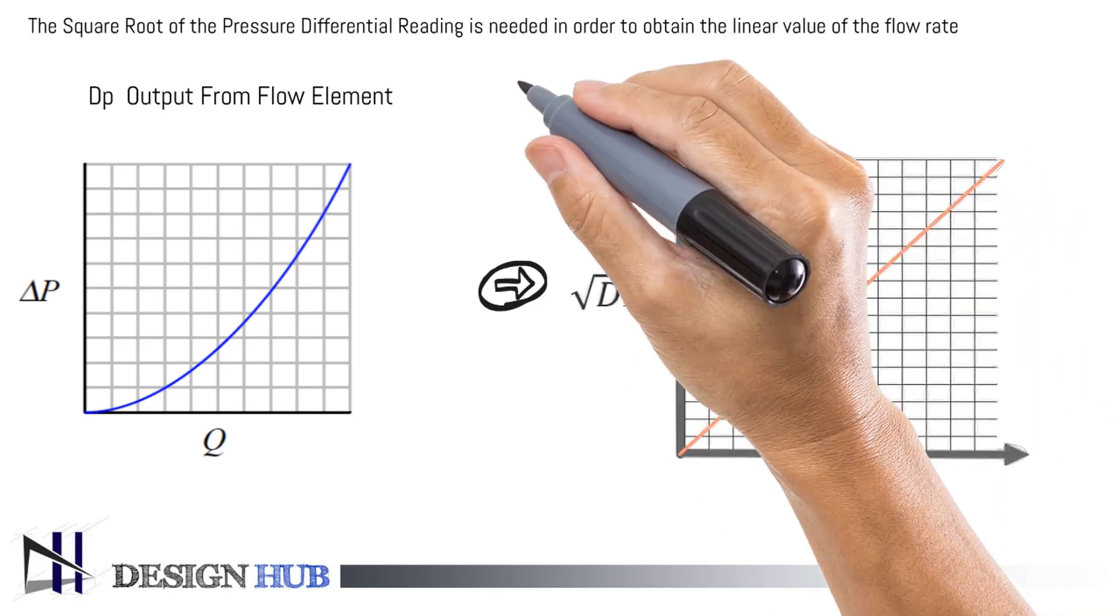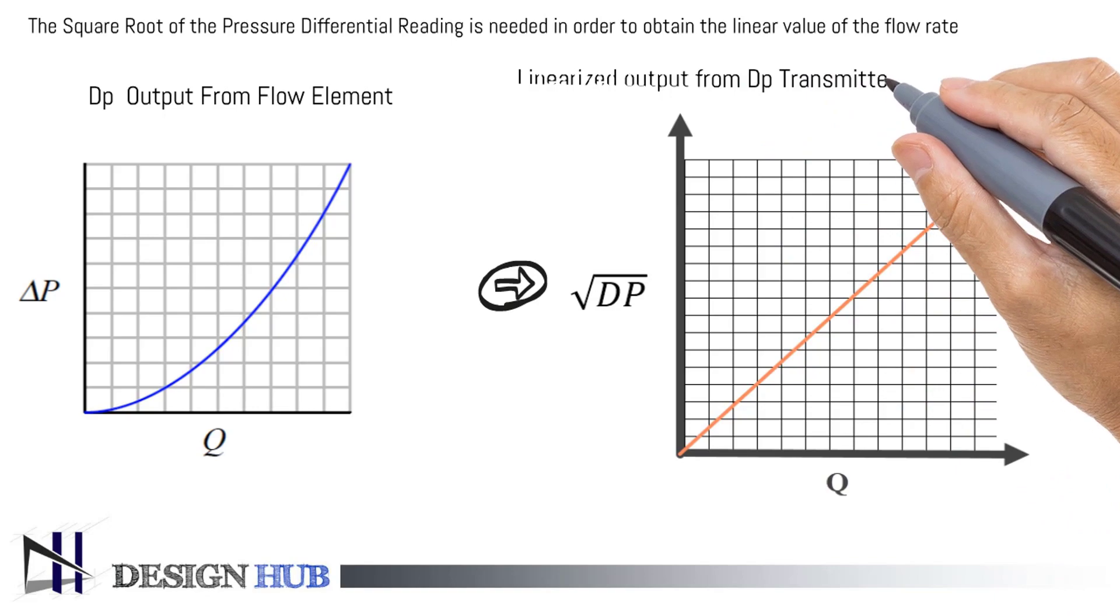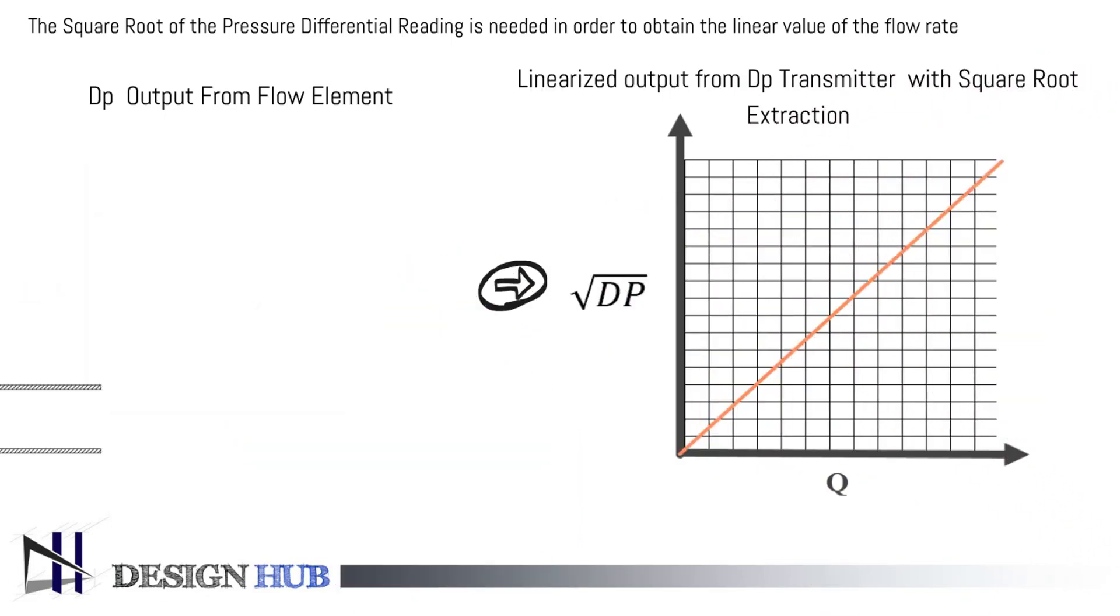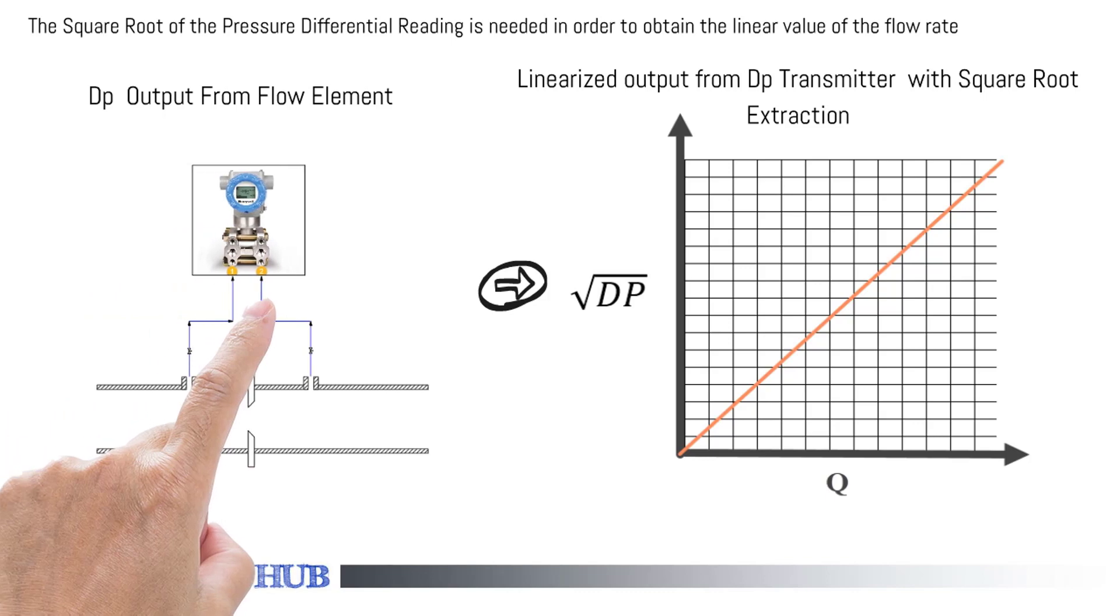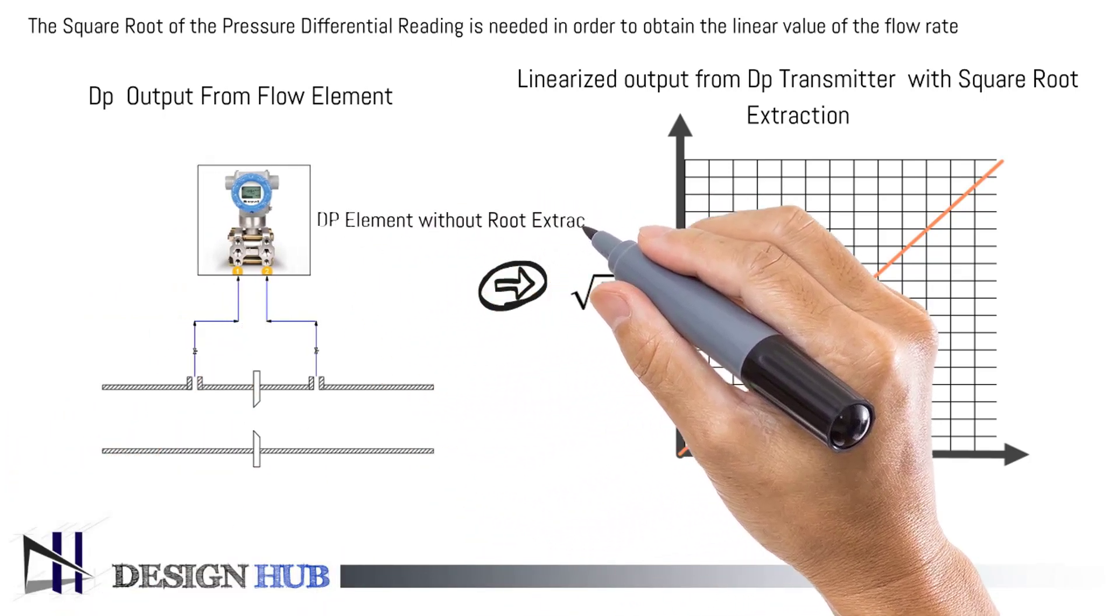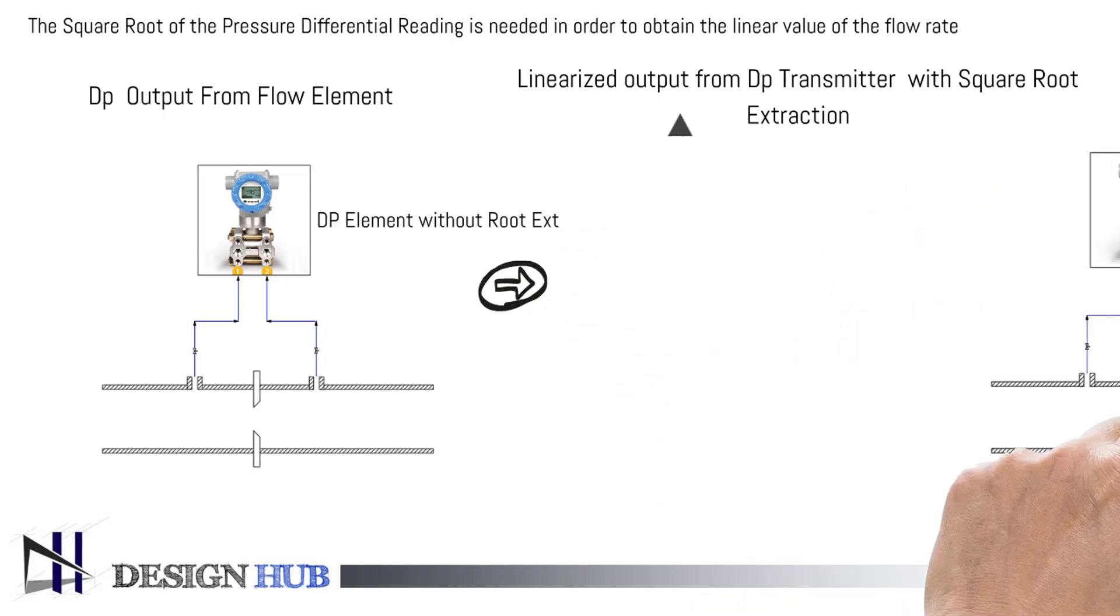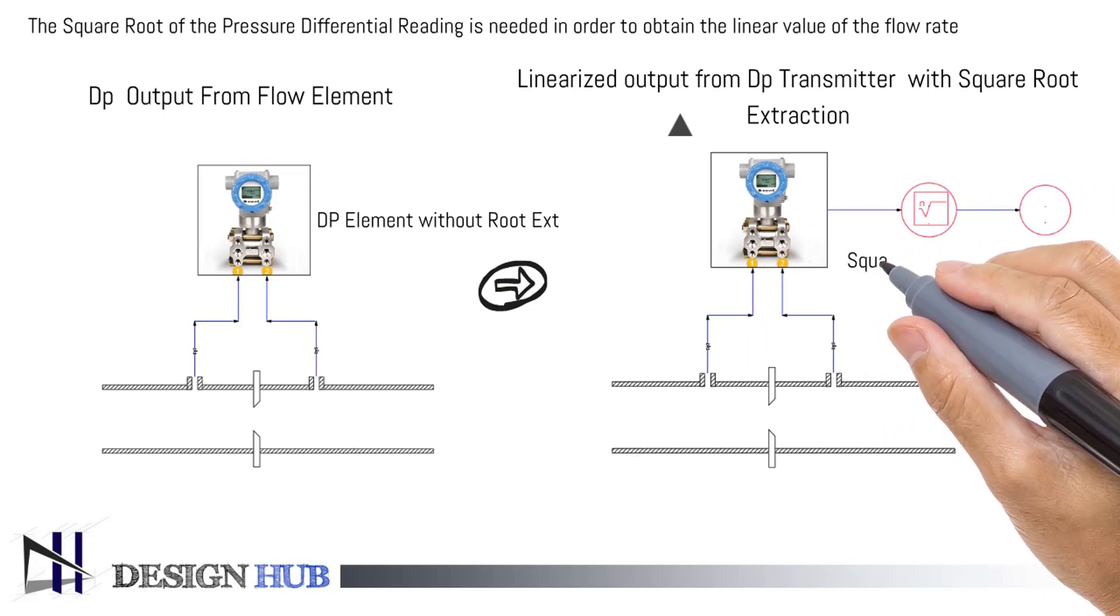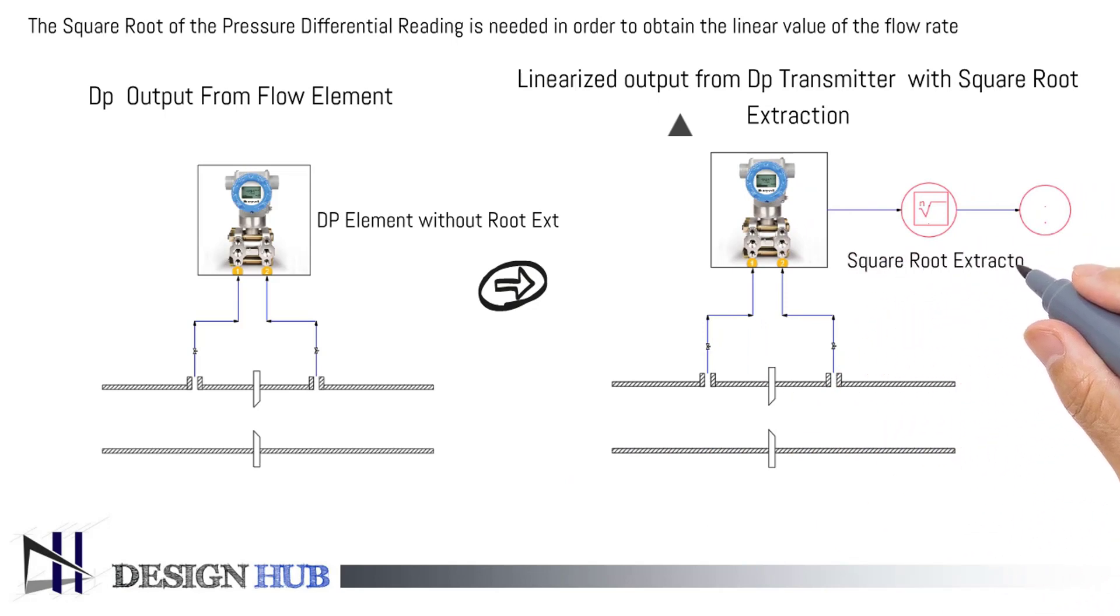This is the linearized output from the DP transmitter with square root extraction. It can divide its own baseline.